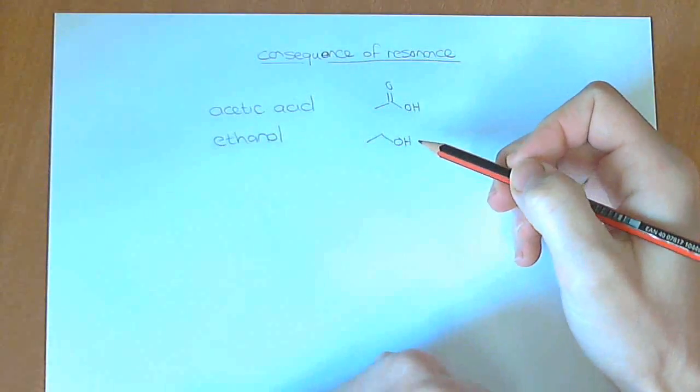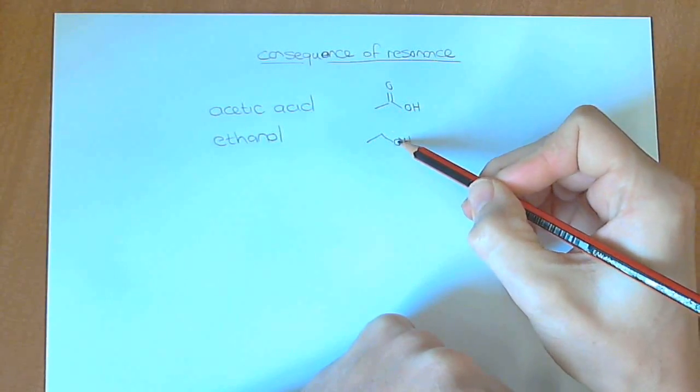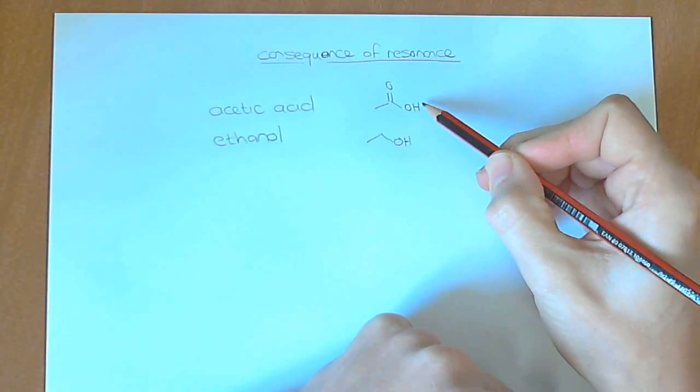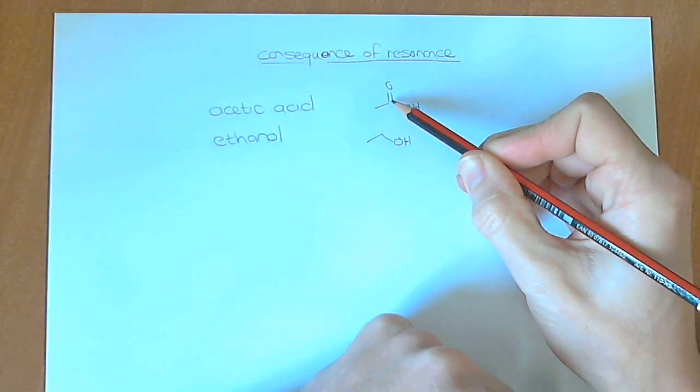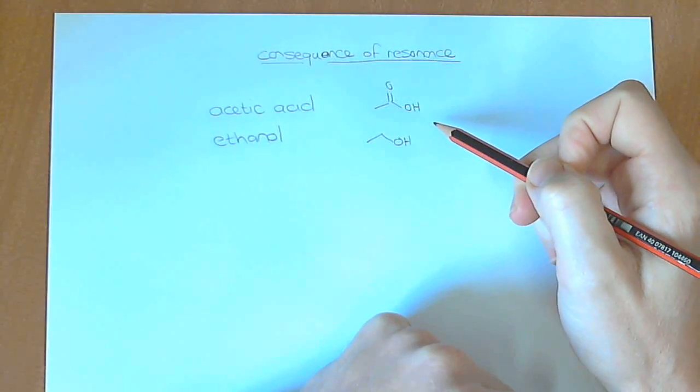If we look at the similarity between these two molecules, they both have two carbons, they both have an OH type of group over here, but this isn't an OH. Because it sits next door to this carbonyl group here, this whole thing becomes a carboxylic acid.